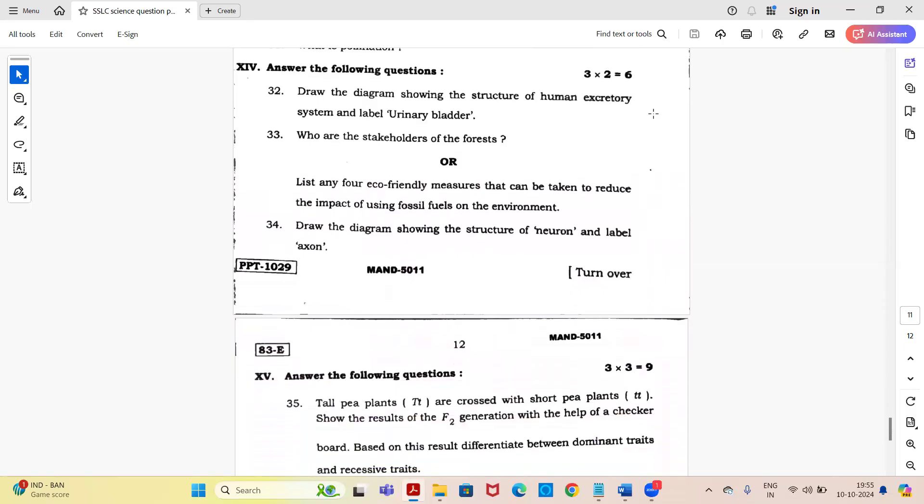Next main, answer the following questions for six marks. Draw the diagram showing the structure of human excretory system and label urinary bladder. Who are the stakeholders of the forests? Or you have an option for question 33: list any four eco-friendly measures that can be taken to reduce the impact of using fossil fuels on the environment.